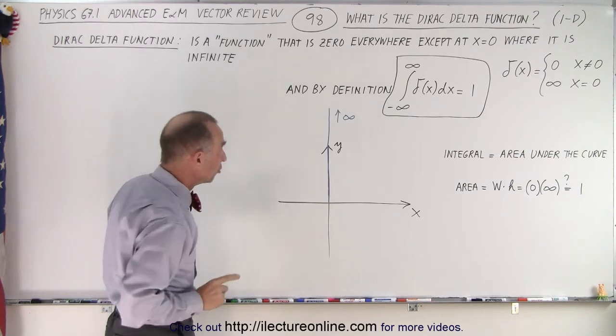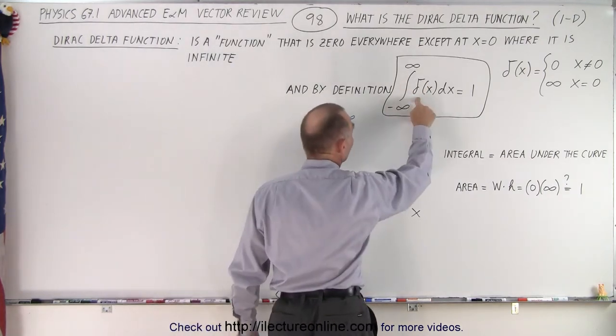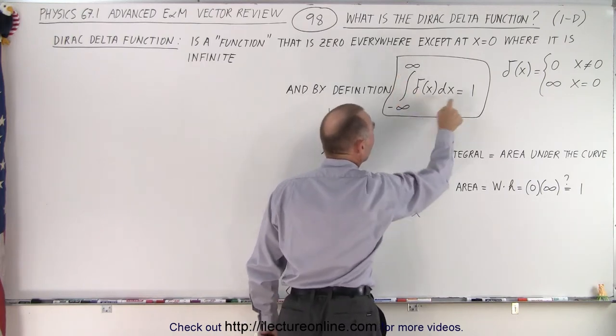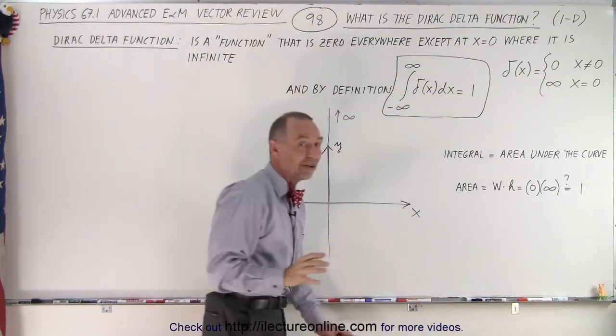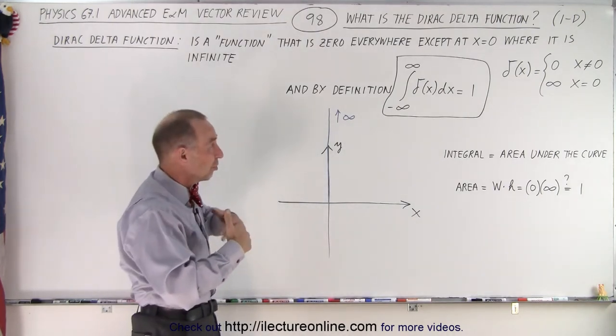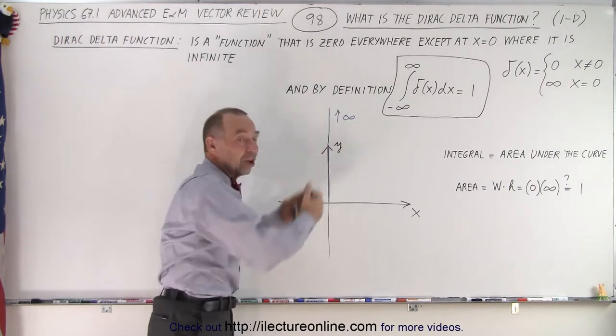By definition, the integral of the Dirac Delta Function from minus infinity to infinity equals 1. That's the key to the definition. Does that really make sense? It really doesn't. We simply define it as such.